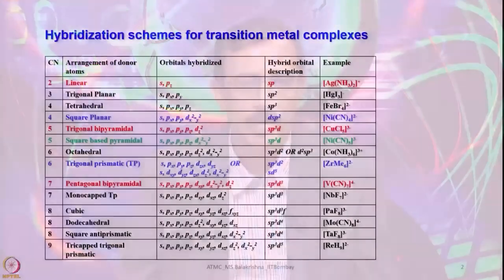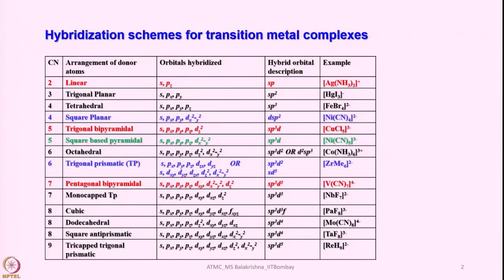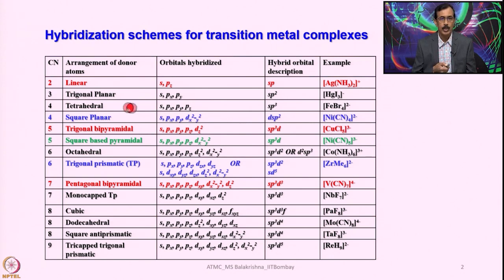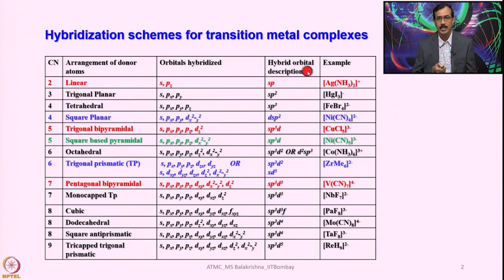You can see the table I have given here. I have covered almost all hybridizations you come across for transition metal complexes having different ligands, different geometries, and hence different hybridizations. Looking at the first one, the arrangement of donor atoms or ligands is linear with respect to the central metal atom, and when the coordination number is 2, we invariably use SP hybridization.